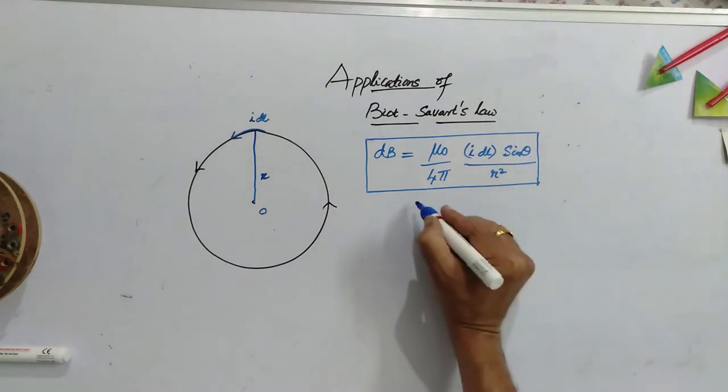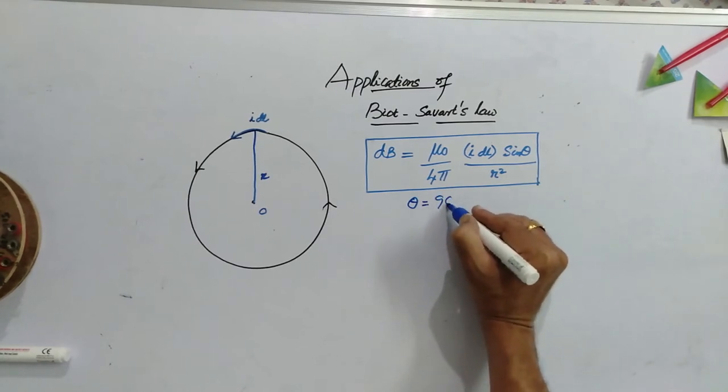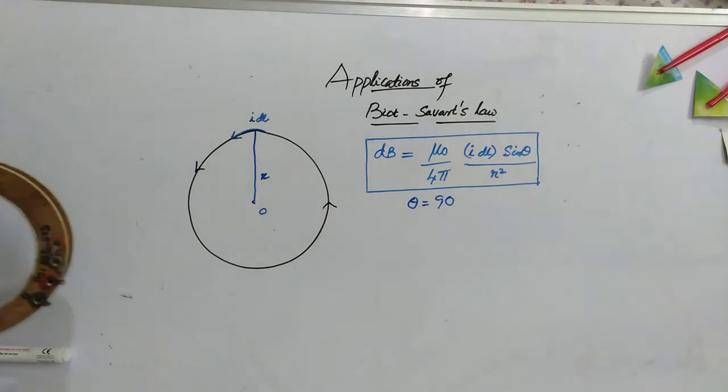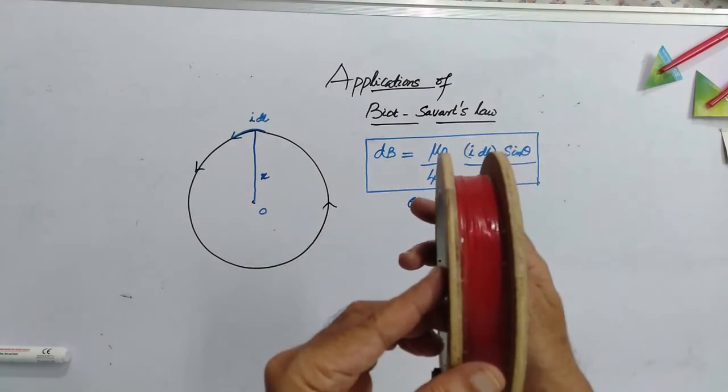Now, what is the value of theta here? Here, as the current element is tangential and this radius vector is r. Therefore, the angle must be 90 degrees. This is a circular loop.